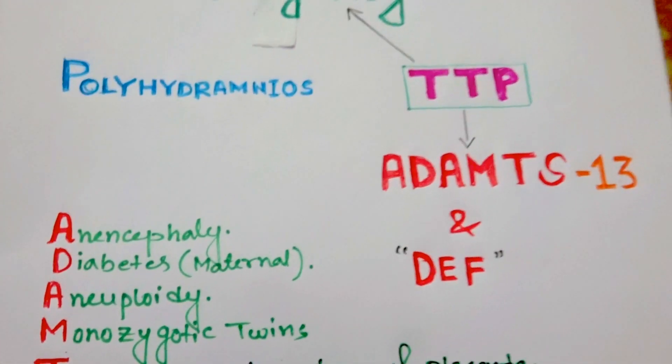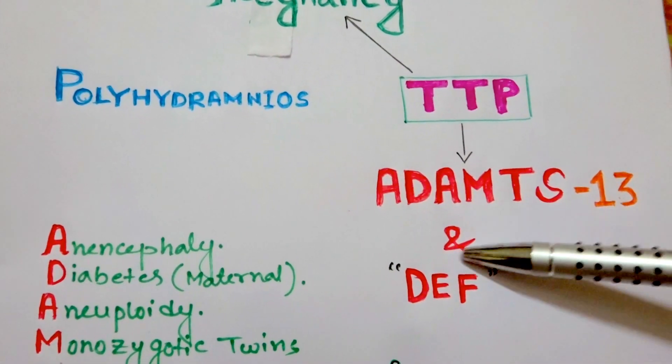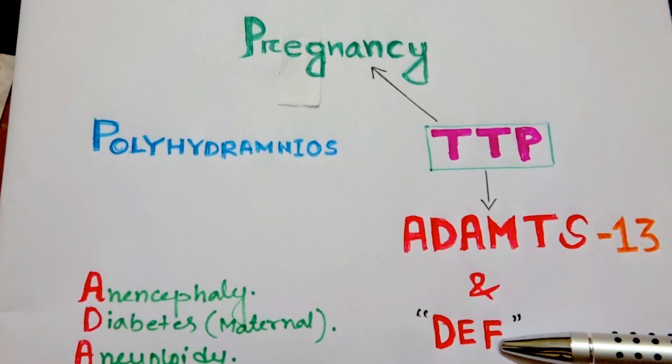Our mnemonic is finished. So our mnemonic is ADAMTS and DEF. This is the association.